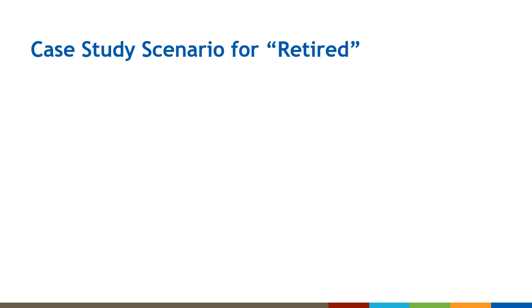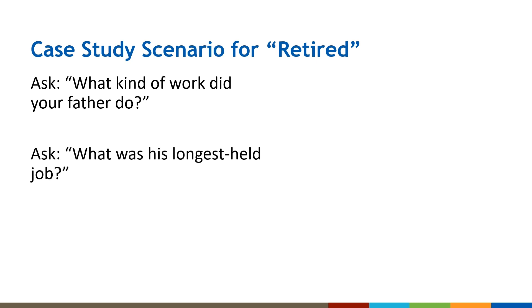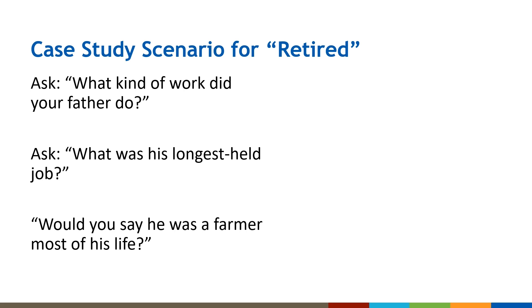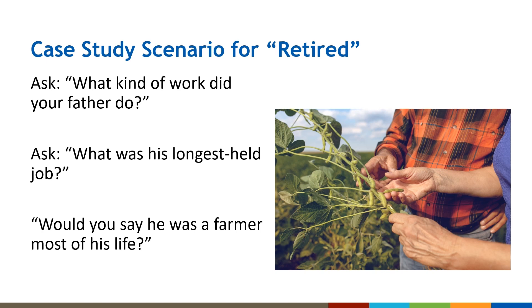You are told the decedent was retired. Please ask for more information: what kind of work did the decedent do? They respond that the last job was as an insurance crop adjuster just after he retired from farming. Ask what was his longest-held job — it may not be the most recent. Probe further: so would you say he was a farmer most of his life? You find out the decedent raised soybeans for most of his life. In this scenario, the person was a farmer whose main crop was soybeans. His occupation is farmer and the industry is soybean farming.